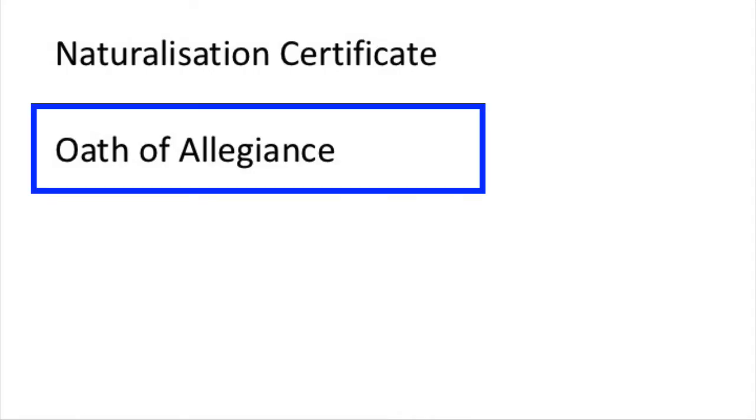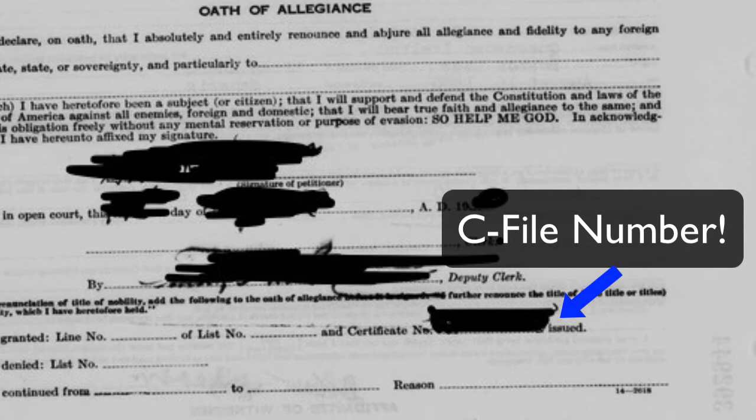The second most reliable place to find the C file number is the Oath of Allegiance. Just look at the bottom, and you can find the C file number there. It's the one that starts with the letter C.